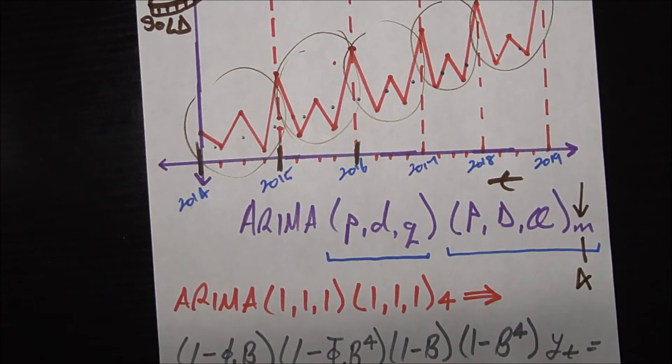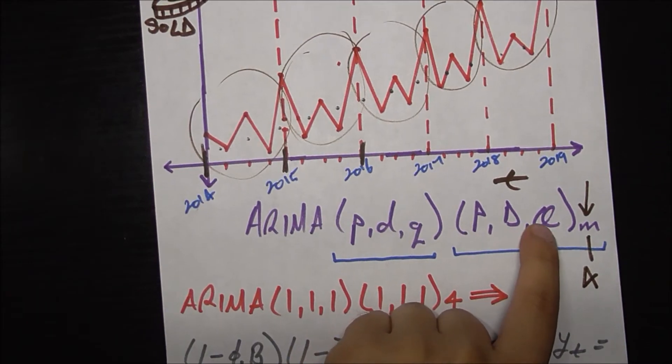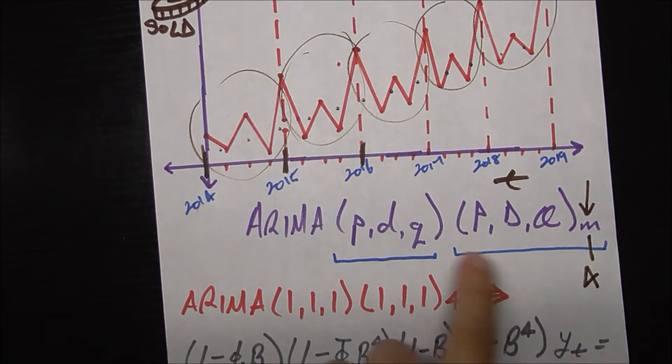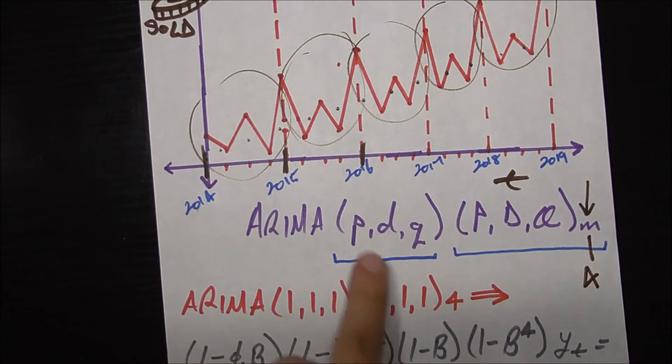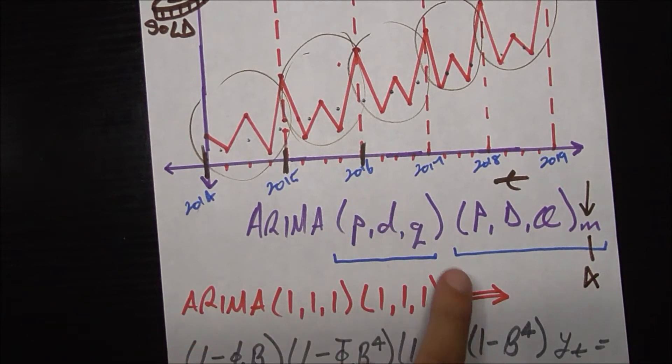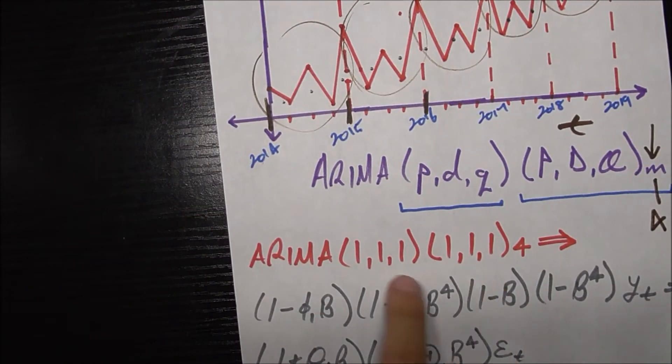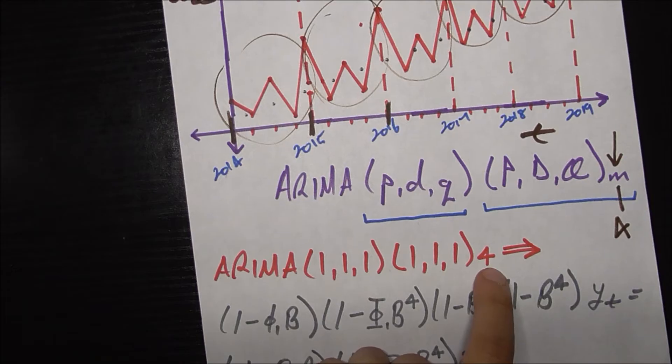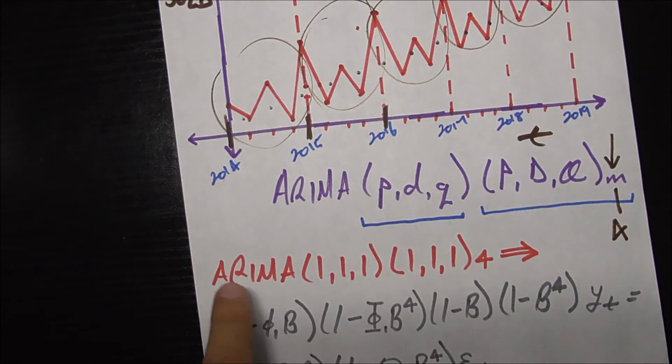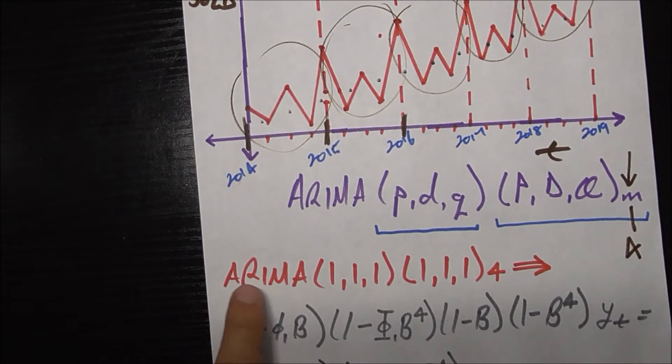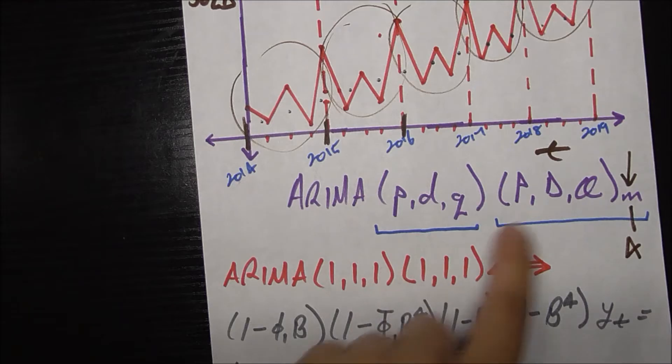Now going back to this uppercase P, uppercase D, uppercase Q, these are the analogs of the lowercase versions, except for the seasonal components. For example, I'm going to plug in some real numbers here, and they're all going to be one in this case, except for the m, which is four, of course. What this model is saying, ARIMA (1,1,1) and then uppercase letters being (1,1,1) as well.